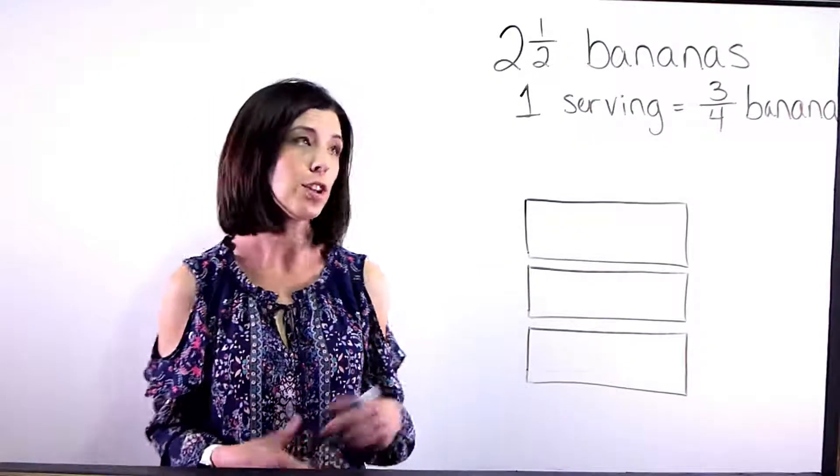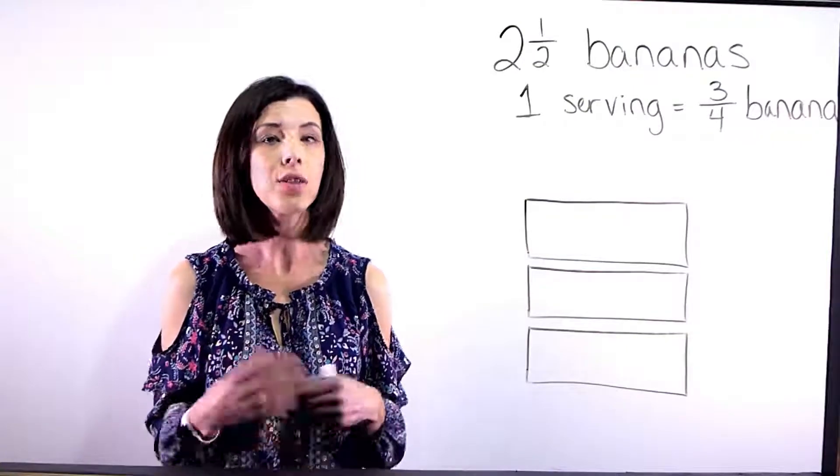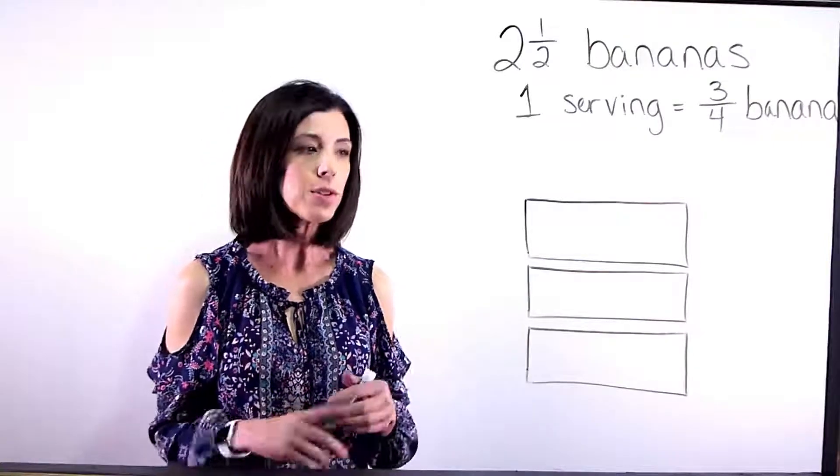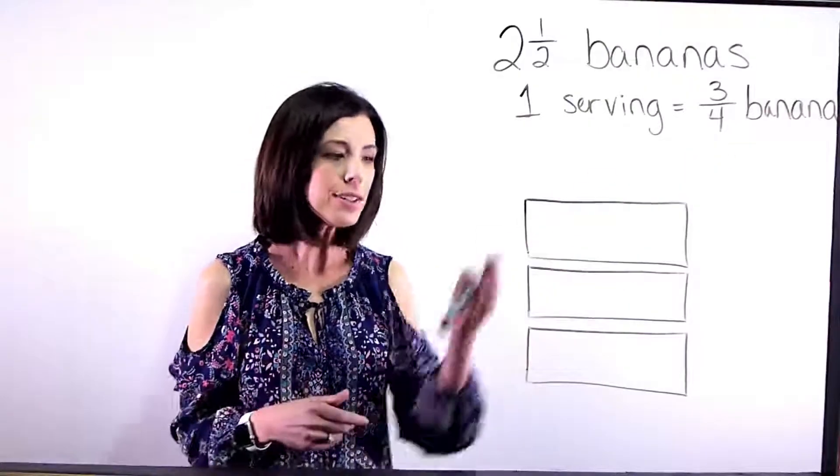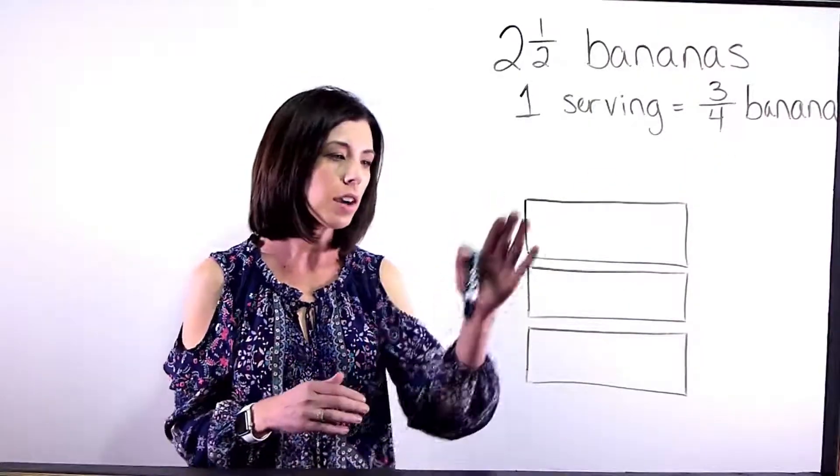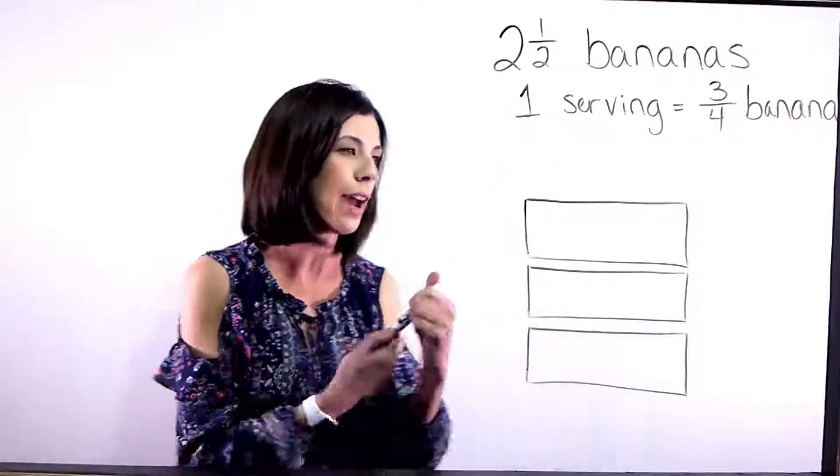Okay, so we have a situation that we have two and a half bananas. One serving is three-quarters of a banana. So let's start, since I know I'm going to need servings in quarters, let's go ahead and break our rectangles into fourths and then I need to shade in what I actually have.